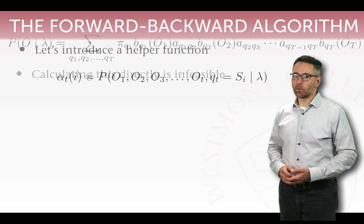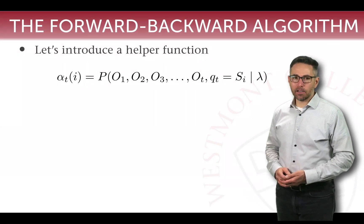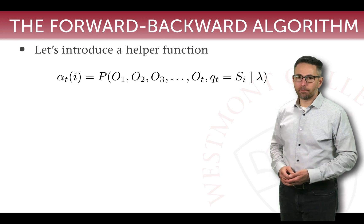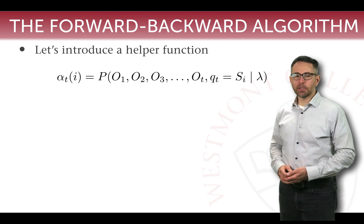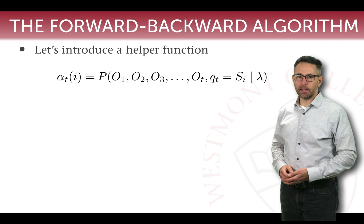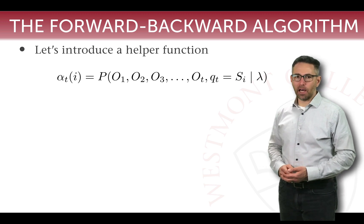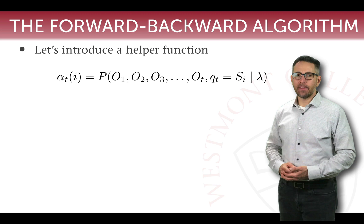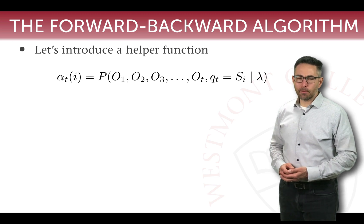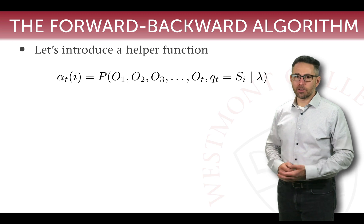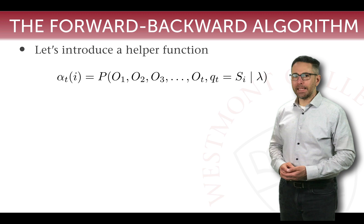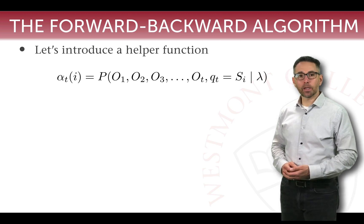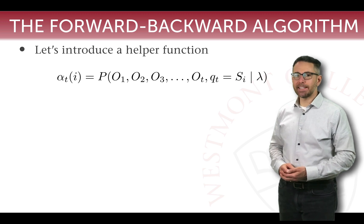Together, those two things were way too many, and that motivated the introduction of the forward-backward algorithm. The forward-backward algorithm relies on two particular helper functions, alpha and beta, but we'll start by talking about the alpha helper function. Alpha is going to help us reduce the number of calculations needed to calculate our goal probability. Because there are a lot of repeated calculations in finding P(O|lambda), introducing alpha reduces those repetitions.